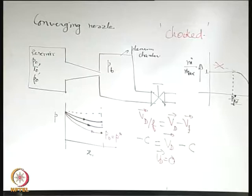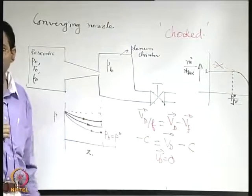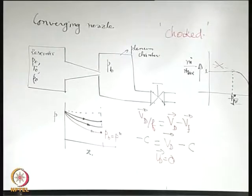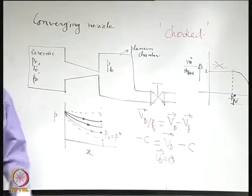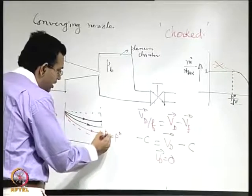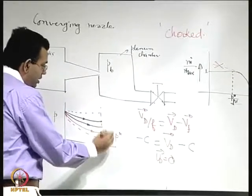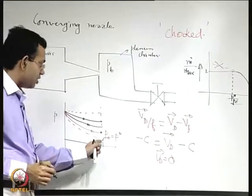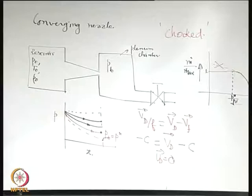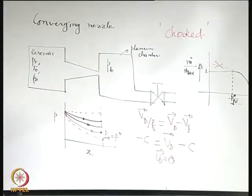The nozzle is choked — it has reached the critical mass flow rate beyond which further reduction of back pressure will not increase mass flow rate, and the corresponding Mach number is 1. If you reduce back pressure further, there will be an oblique expansion wave outside the nozzle. We will not go into those details, but the important point is that at least in terms of mass flow rate, it will not improve further.